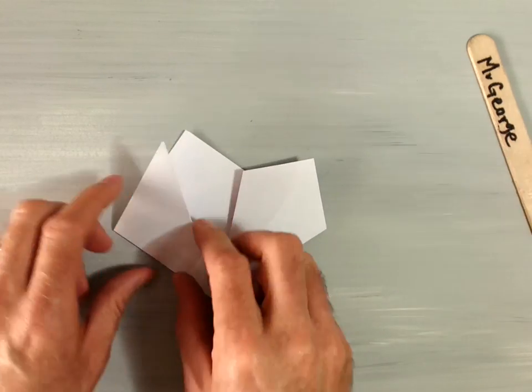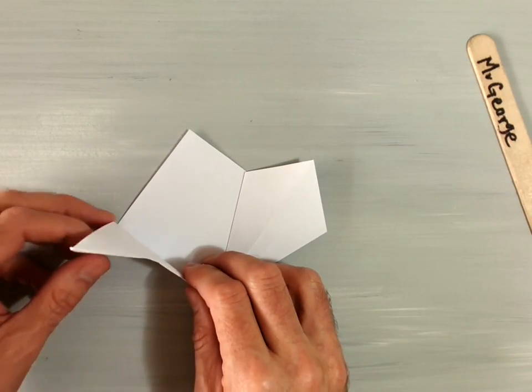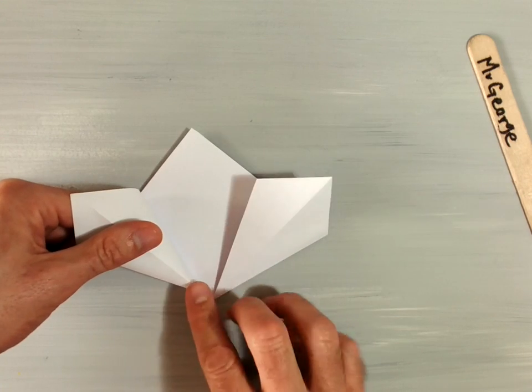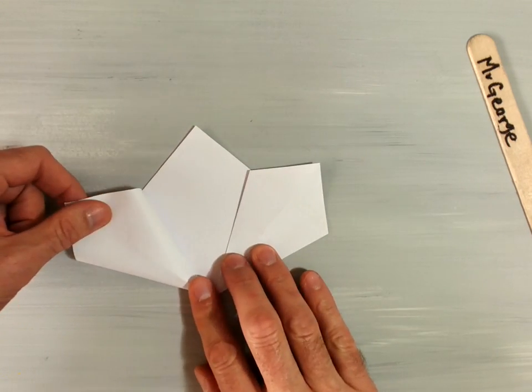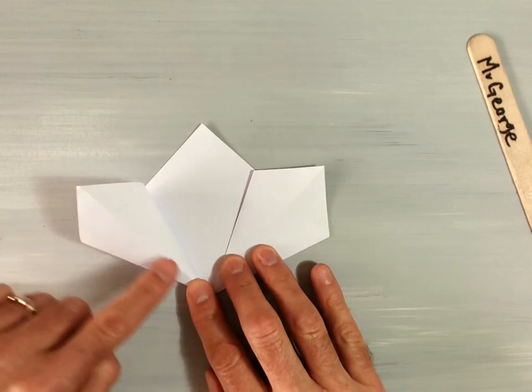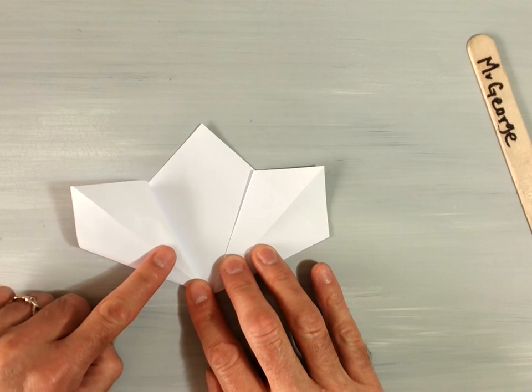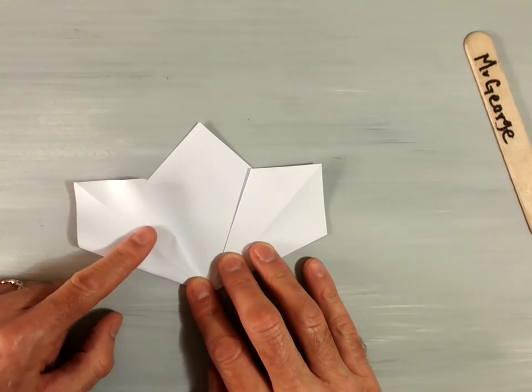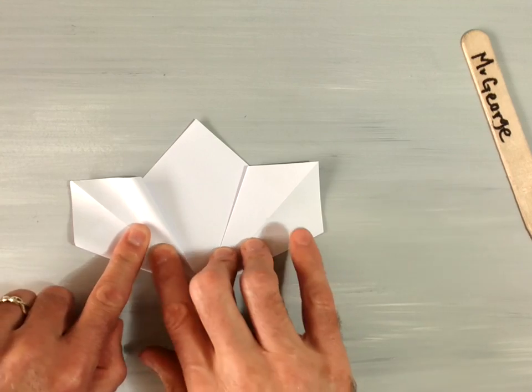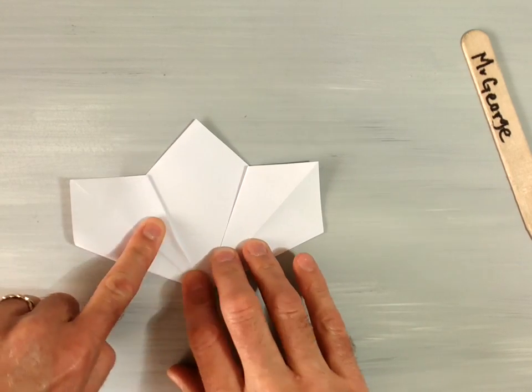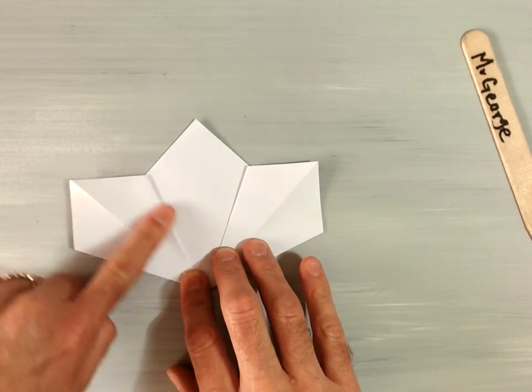Now repeat that step on the left-hand side. Bring your flap up, separate it with your finger, and squash it down to make that kite shape so that this crease lines up perfectly with the crease underneath.